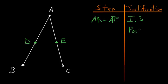And then using Postulate 1, we can connect those points. Postulate 1 says that we can draw a straight line between any two points. So we just created DE here.